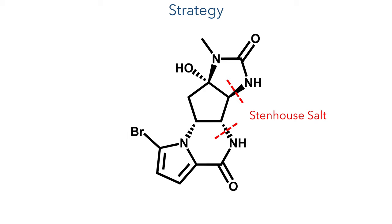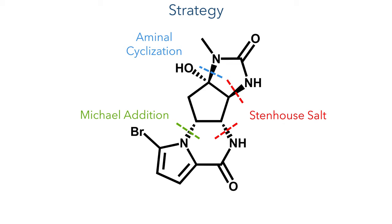To form the 1,2-cis cyclourea, they would use an intramolecular hemiaminyl cyclisation. To introduce the final carbon-nitrogen bond, they would use an intramolecular Michael addition, with the stereoselectivity guided by the stereochemistry of the carbon-nitrogen bond already present in the molecule.